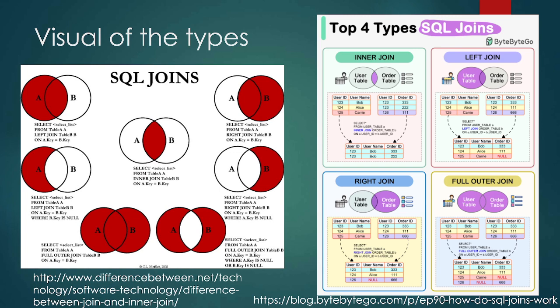When we talk about the different types of joins, there are a whole bunch of different ways to look at this. There are visual examples using Venn diagrams with the SQL command below them, and examples with Venn diagrams, SQL commands, and tables together. For an inner join, we are looking at anything that matches on table A and table B — only what matches. We select from table A, do an inner join on table B on A key and B key.